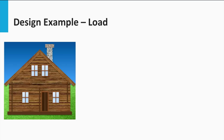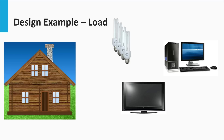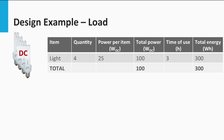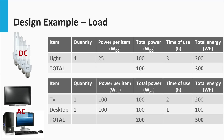Consider a house that is to be powered independent of the electric grid by means of a stand-alone PV system. Three simple kinds of loads are required: lights, TV and desktop computer. The lights are DC powered, while the TV and the desktop computer are AC powered. Both the DC loads and the AC loads require a total energy of 300 Wh each per day. The system requires a total autonomy of 2 days — meaning a fully charged battery should be able to feed the load for 2 days without solar power.